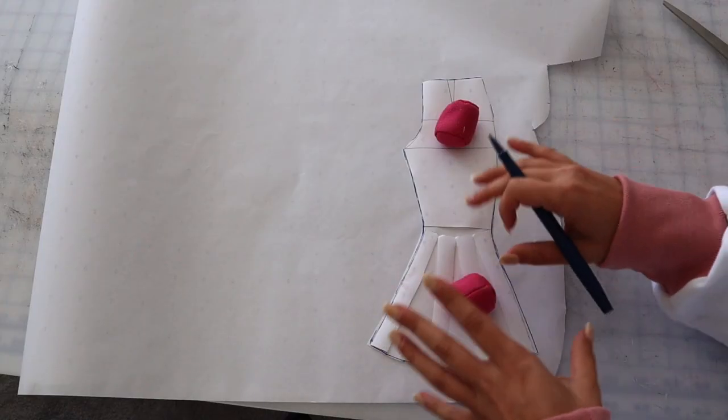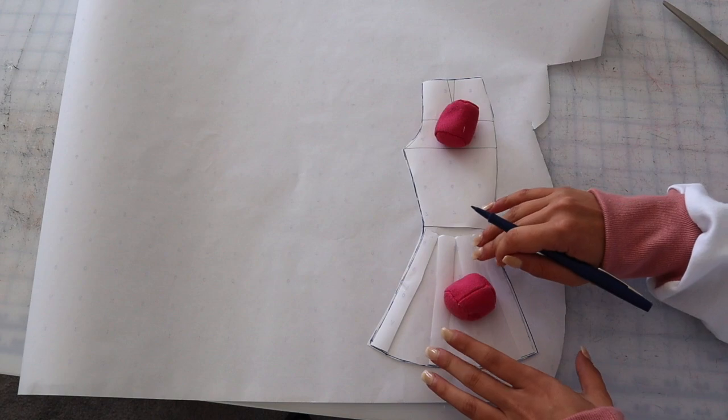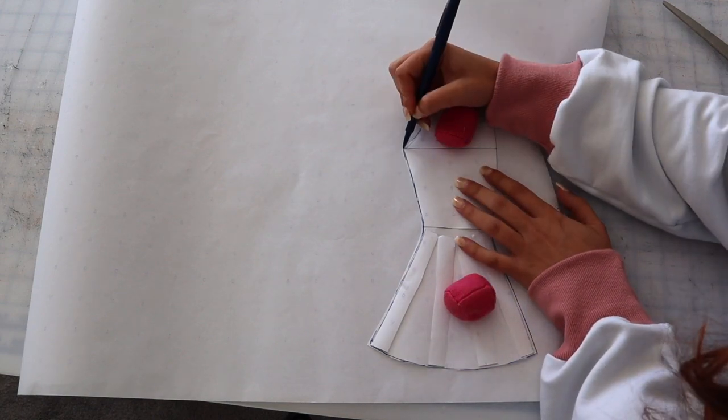So now you can cut this out. And now you can retrace your pattern just to have a clean piece that doesn't have any tape or extra slashing and things on it, just for a cleaner look.